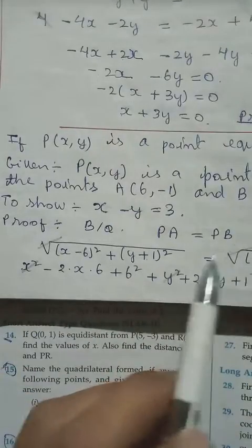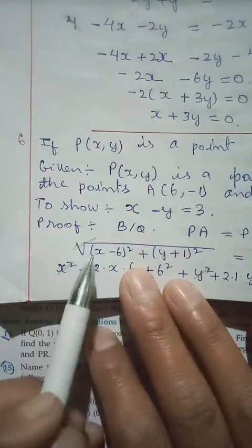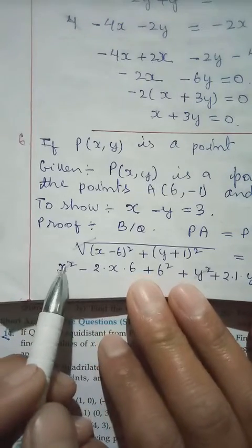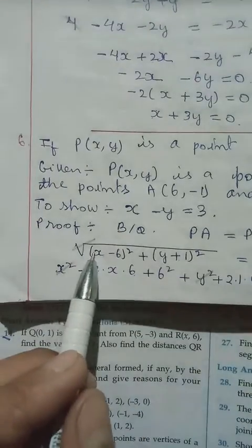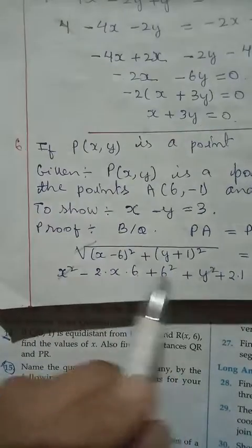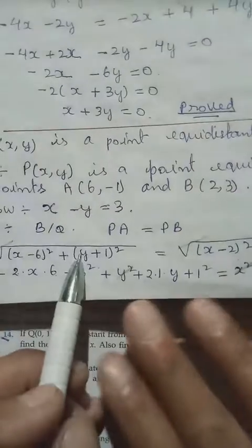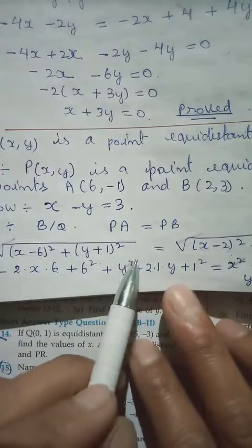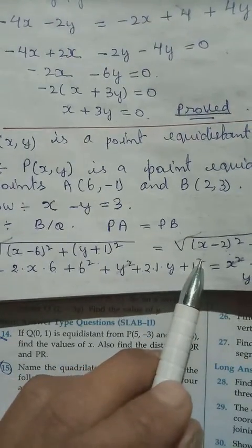Since both sides are equal, we can cancel the square root. Now expanding the left side: for x minus 6, one alphabet and one number, we apply the (a - b)² formula, giving x squared minus 2 times x times 6 plus 36. For y plus 1, we apply (a + b)² formula, giving y squared plus 2 times 1 times y plus 1 squared.